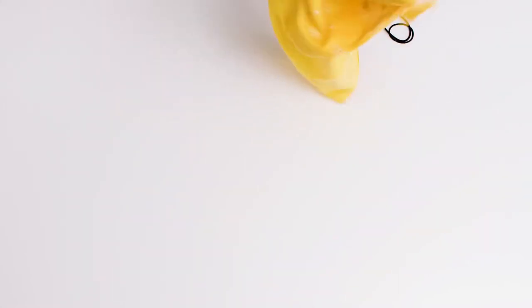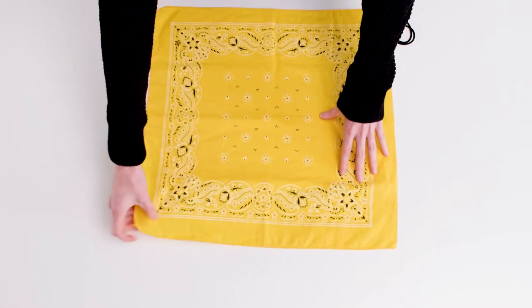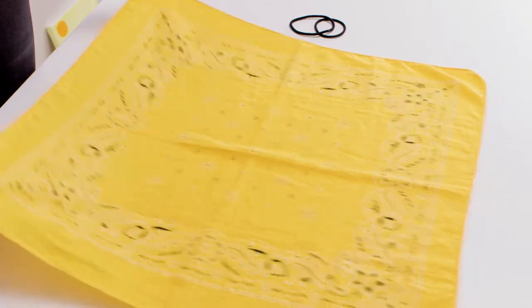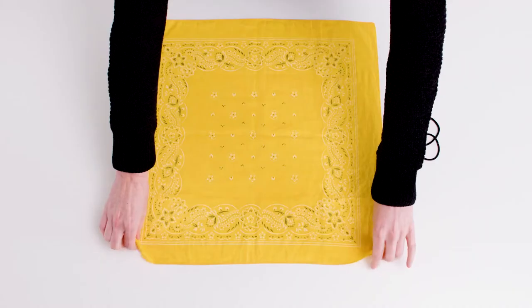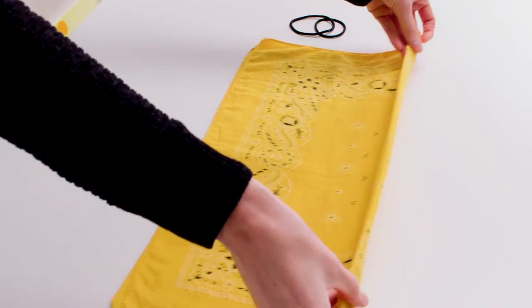So grab a bandana or cloth square that can be washed after each use, two hair ties or rubber bands, and let's make a mask together. Lay the cloth square out flat, fold it in half, then half it again.